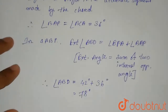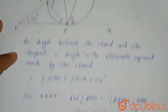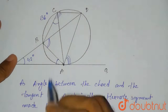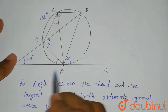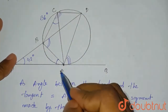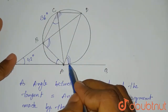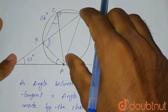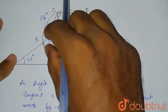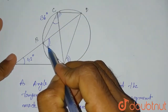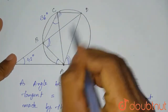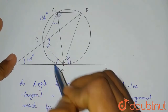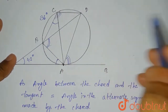Now we have to find out angle QAD. Again, this is the tangent and this is the chord, so there is this angle. This angle will be equal to the angle made by the chord — that means this one — because it is the angle in the alternate segment.